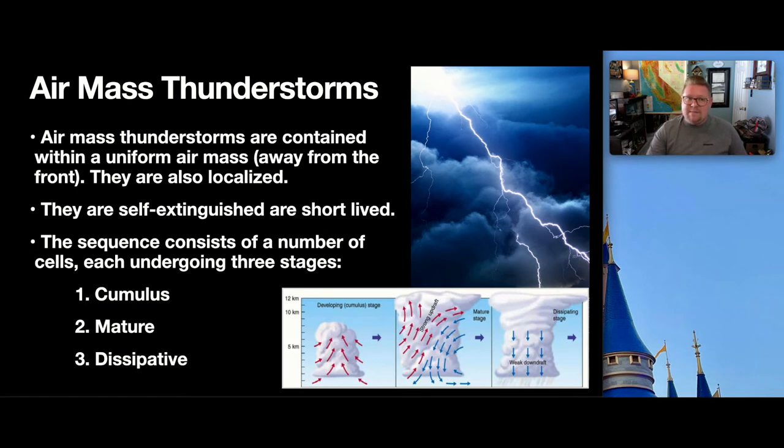Now, that being said, if we put this kind of together, we can talk about air mass thunderstorms. So, the big ones, the cumulonimbus storm systems that are very, very large. And, we'll also introduce the three steps or the three stages within this development. Air mass thunderstorms are contained within a uniform air mass and generally away from a front. They're also very localized. So, it's a big storm system within a certain area. So, you would experience a mass thunderstorm in one area, one town, one city in which it's experiencing. So, it's one localized event. What's also interesting about them is that they are self-extinguished and short-lived. The sequence consists of a number of cells, but each of these cells going through these stages of the cumulus mature and then dissipated.